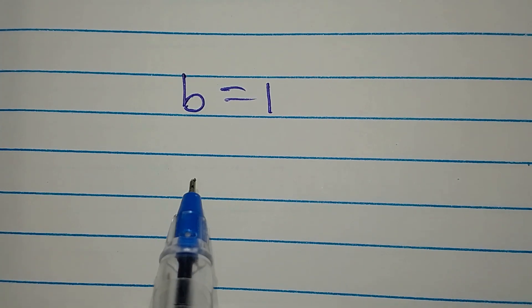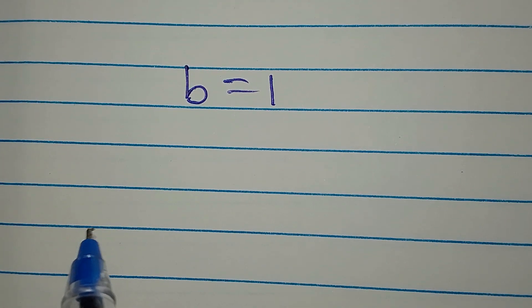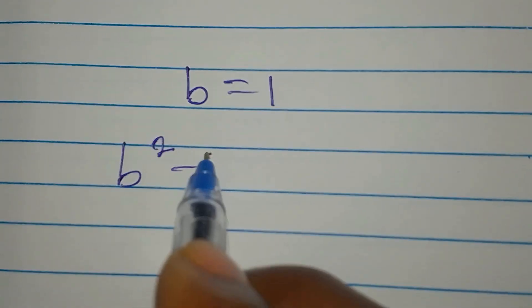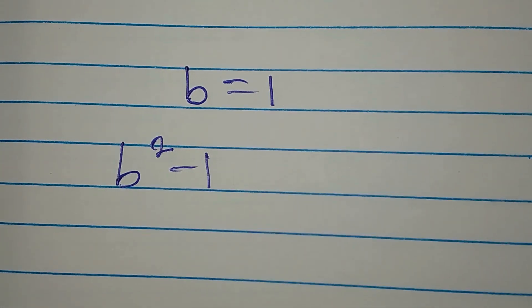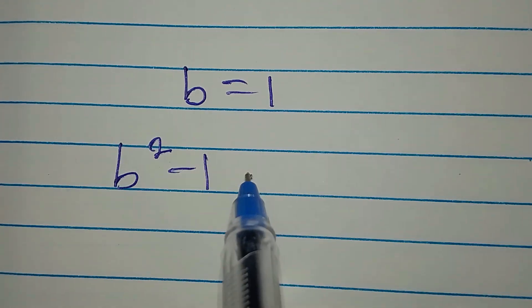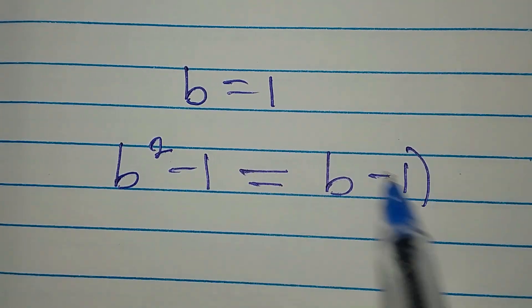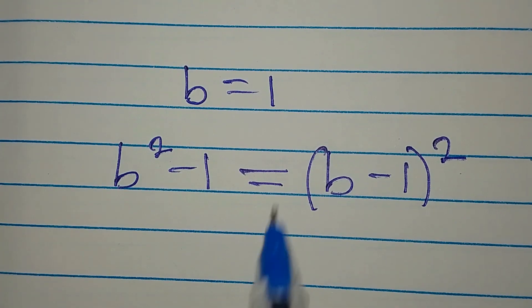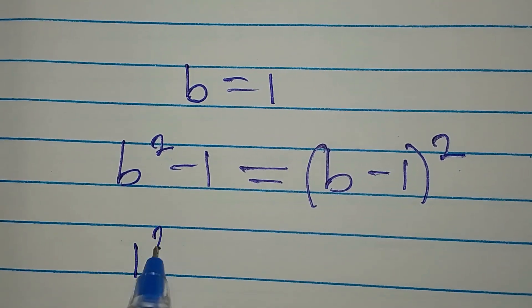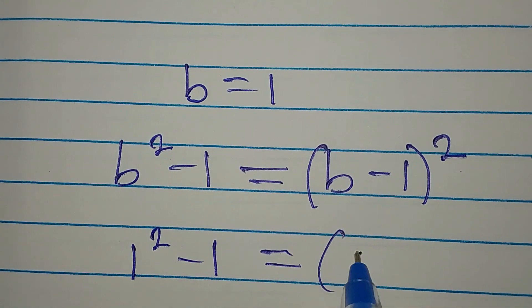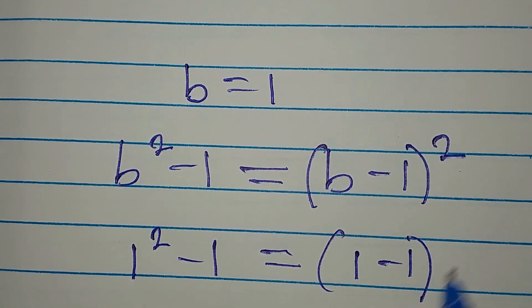Okay, so our b is 1. But the equation is b squared minus 1 equals b minus 1 squared. So if we put 1 here, now it's going to be 1 squared minus 1. Then on the other hand, it's going to be 1 minus 1. And this is squared.